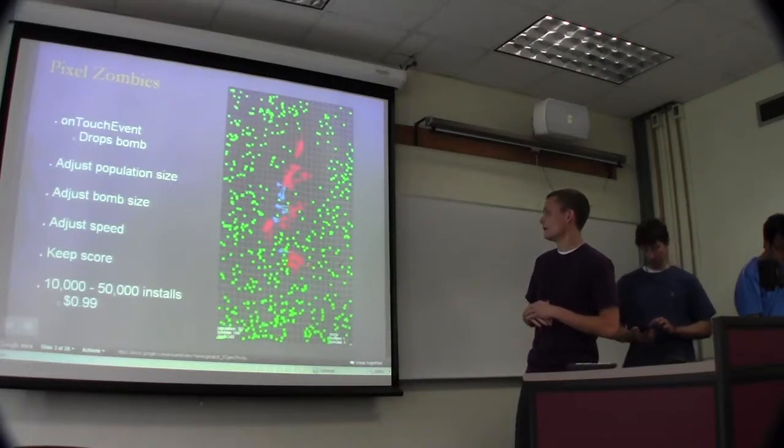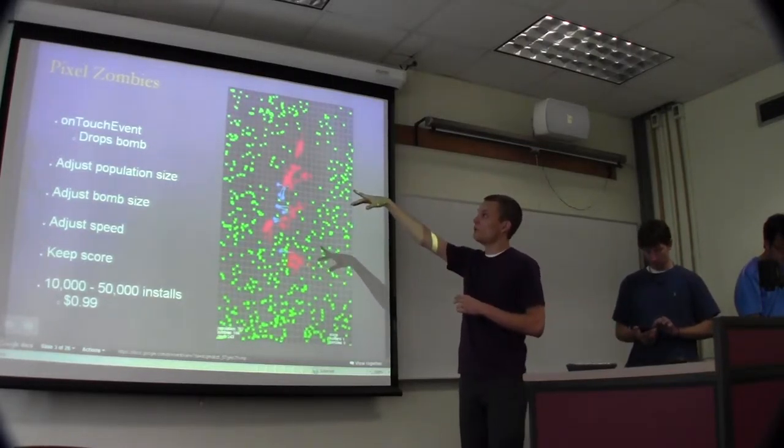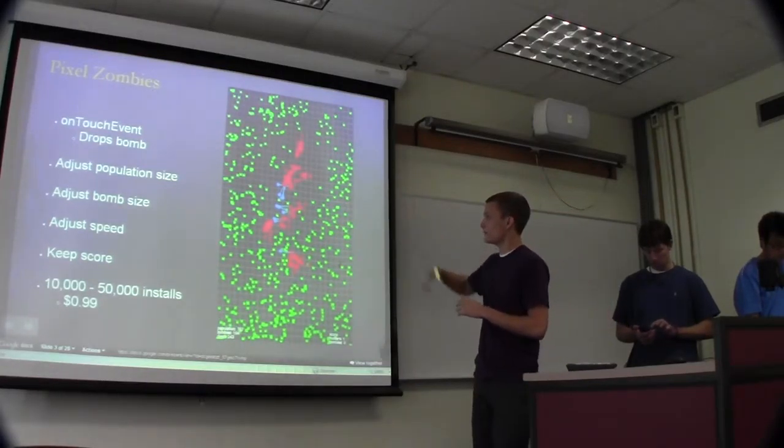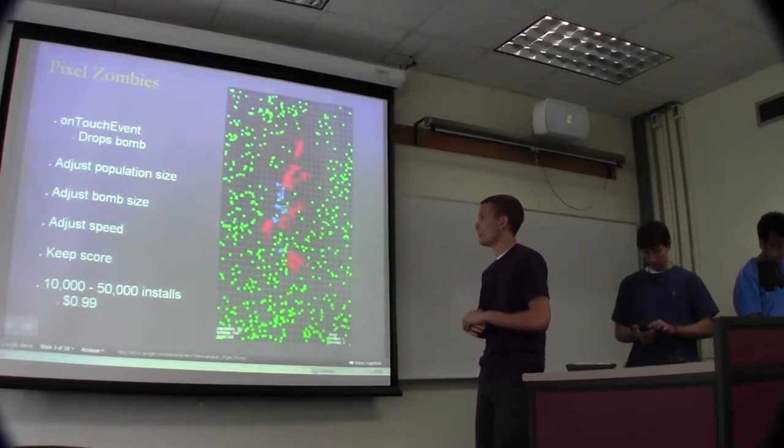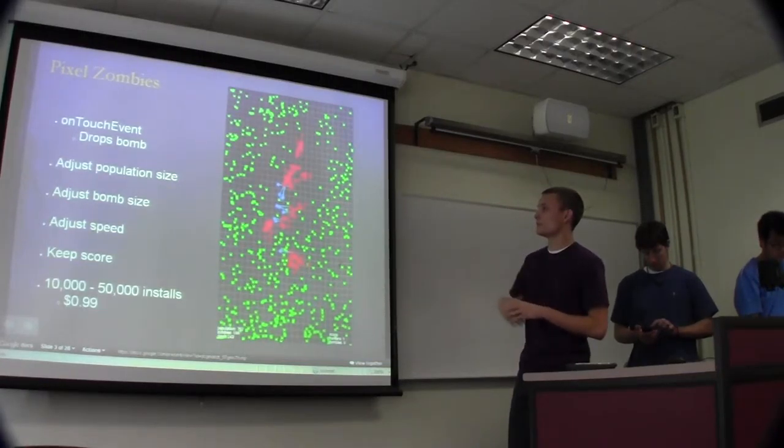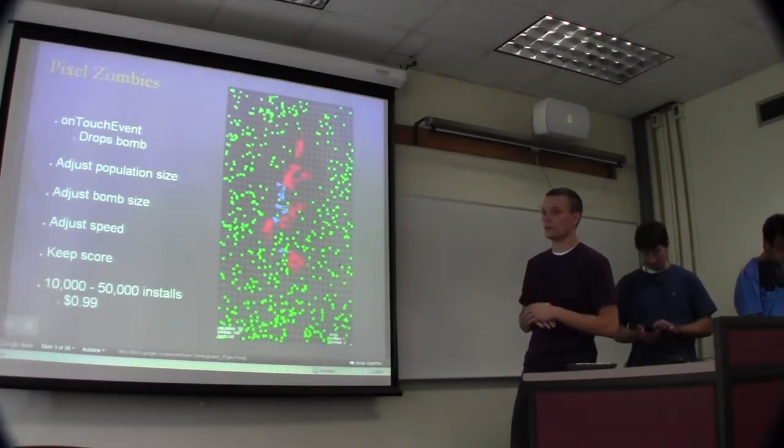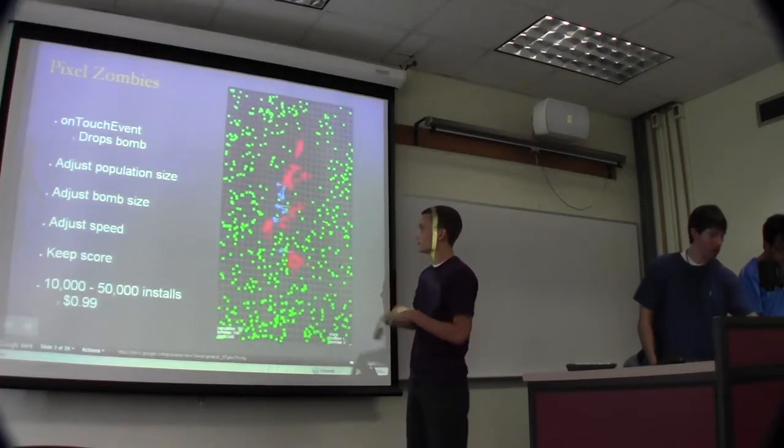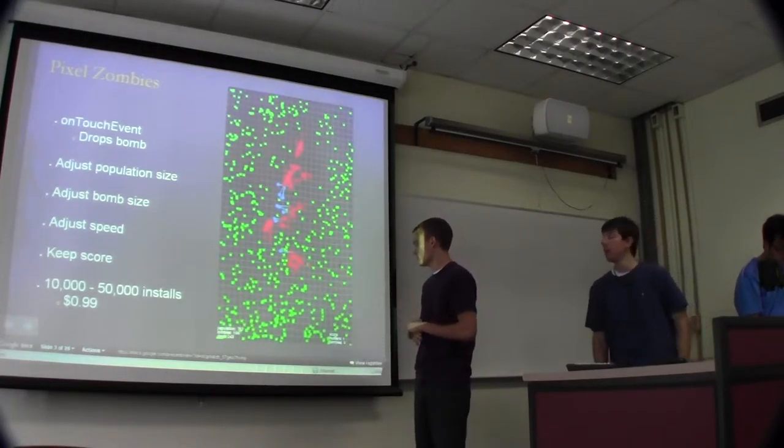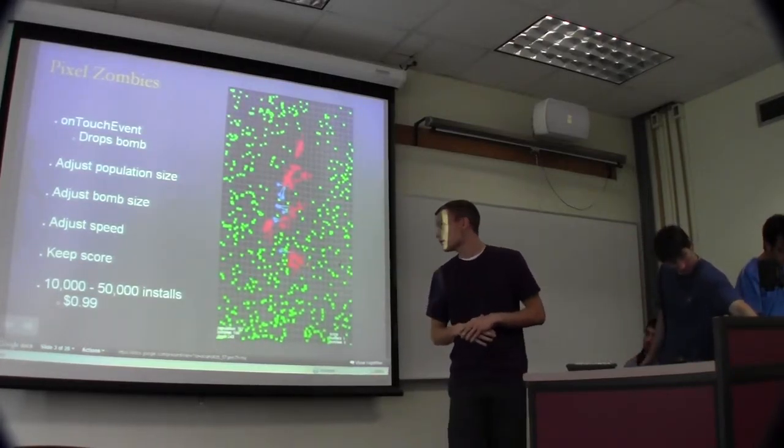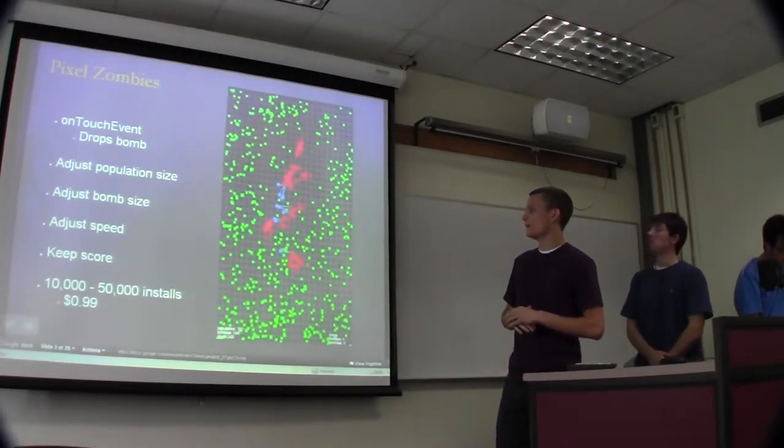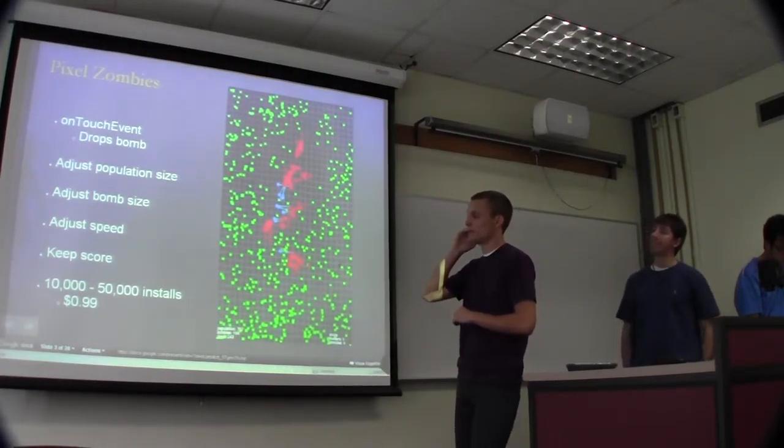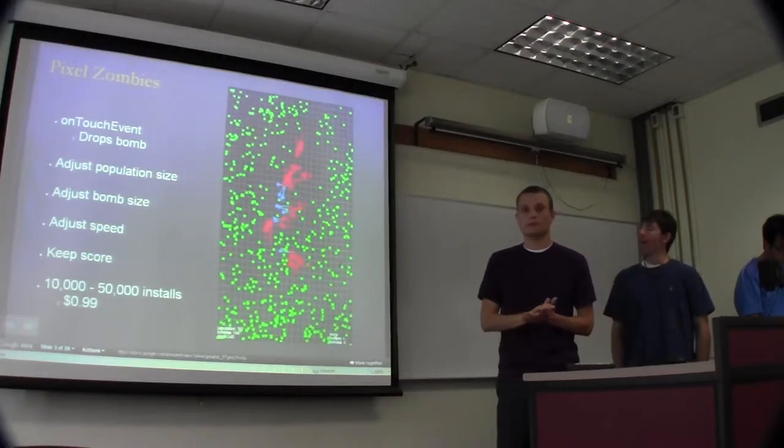This live wallpaper actually overloads the on-touch event method, which we'll talk about later, and whenever you touch the screen you can drop a bomb. There's a few settings implemented here. You can adjust the size of your bomb, population size, you can keep scores so like while everything's moving around there's more zombies, more hunters, whatever. You can see actually the score that's going on in the game. So according to Android Market, there's between 10 and 50 thousand installs of this app at a dollar apiece.